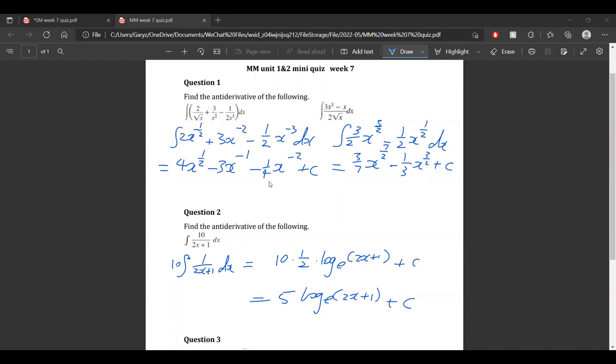After we do that for every single term we can now start anti-differentiating. We know that the anti-differentiated form must be 1 greater than the current power. For example, we take the first term 2 to the power of negative 1 half. We know that its anti-differentiated form must be something times x to the power of 1 half. And we know that a half times something equals 2, therefore the something must be 4, and therefore we know it's 4x to the power of a half.